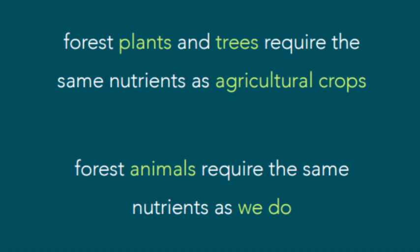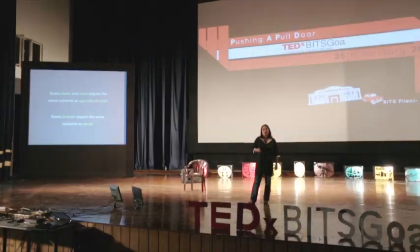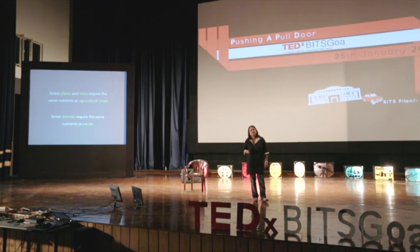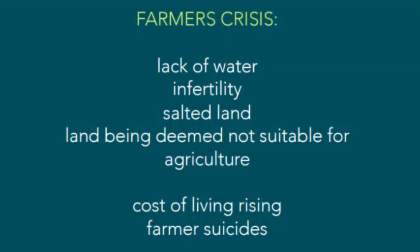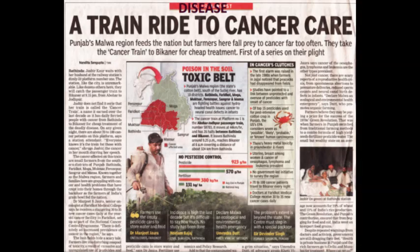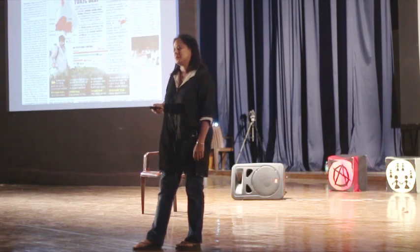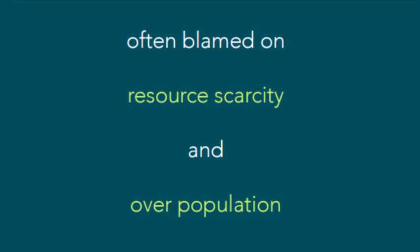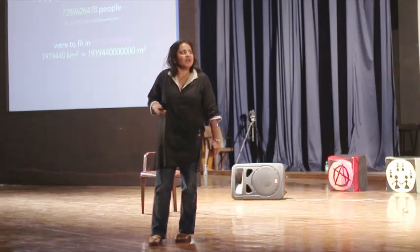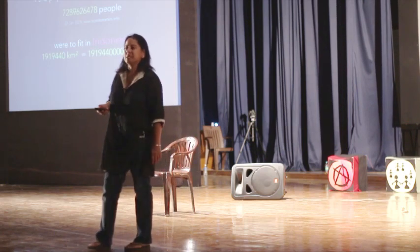Forest plants and trees require the same nutrients our agricultural crops require, and animals in the forest require exactly the same nutrients we require. Outside the forest, we have a crisis: farmers lack water, soil is deemed infertile, land is often salty, the cost of living is increasing, and there are numerous farmer suicides. Farmers are getting cancer at an alarming rate — there's a train called the cancer train in the farming region of Punjab, full every day going to the cancer hospital.